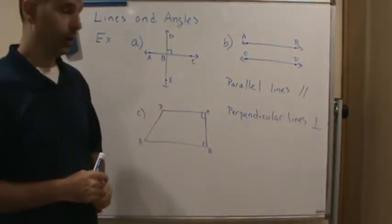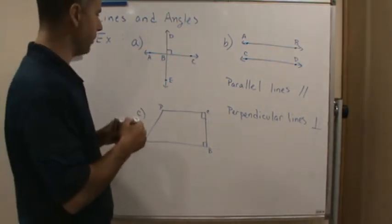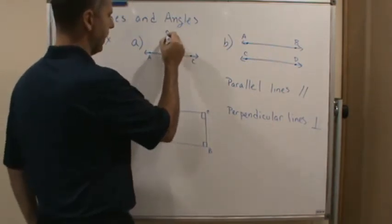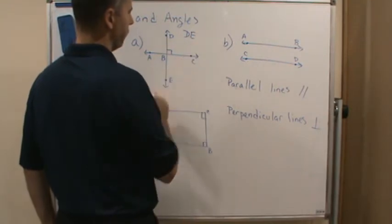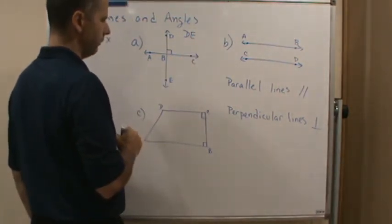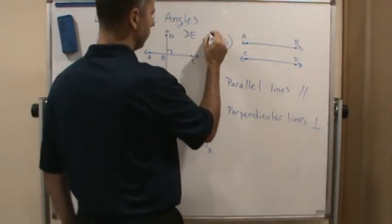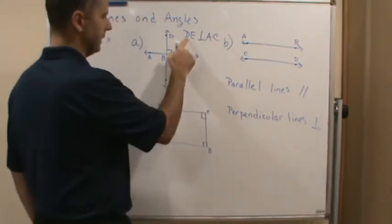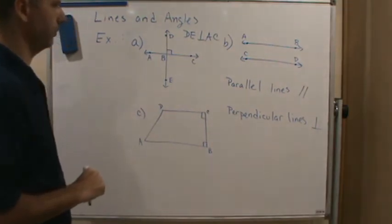So these are perpendicular lines. The way we would write this: if line DE is perpendicular to line AC, I would write DE with a line above it, then the perpendicular symbol, then AC with a line above it.